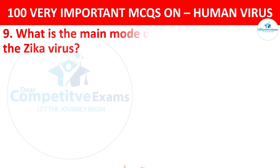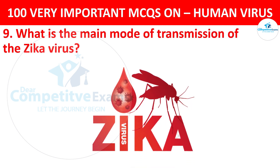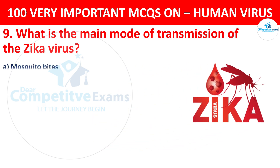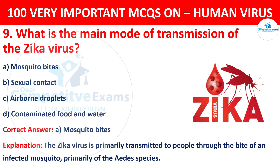Question 9. What is the main mode of transmission of Zika virus? Your options are mosquito bites. The correct answer is A, that is mosquito bites. Zika is primarily transmitted to people through the bite of an infected mosquito, primarily Aedes species.